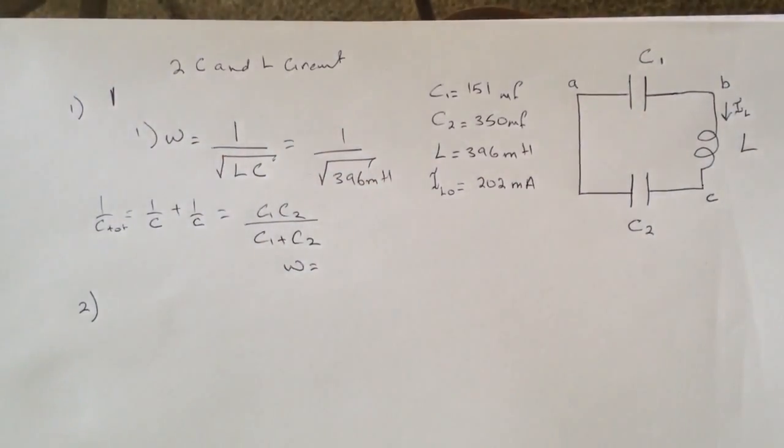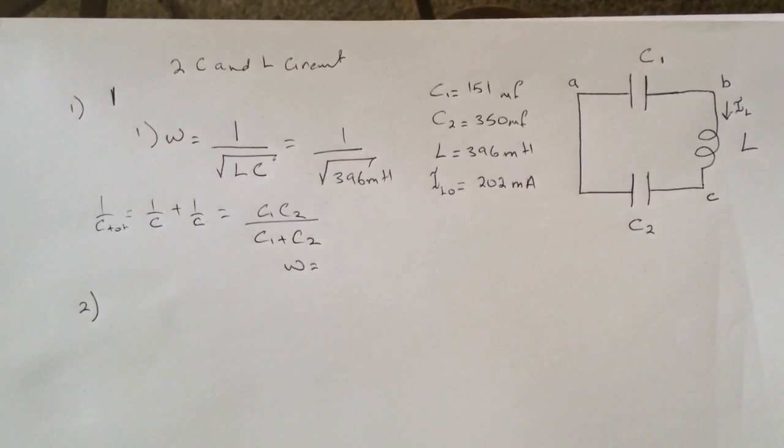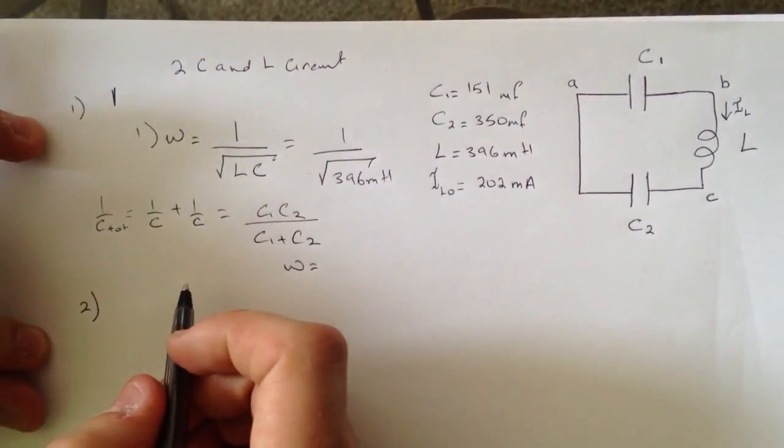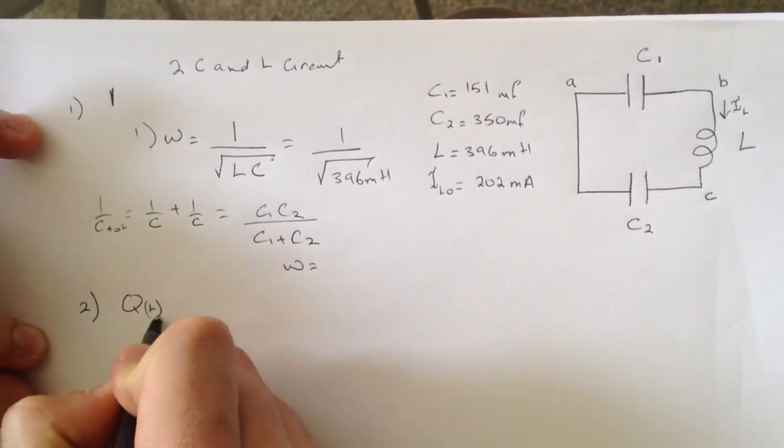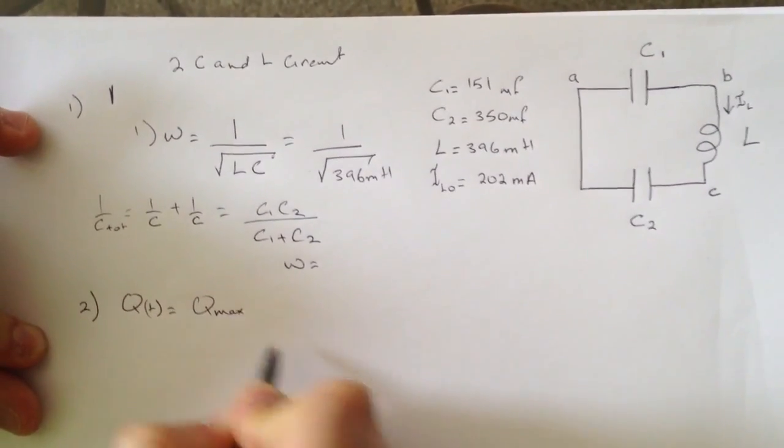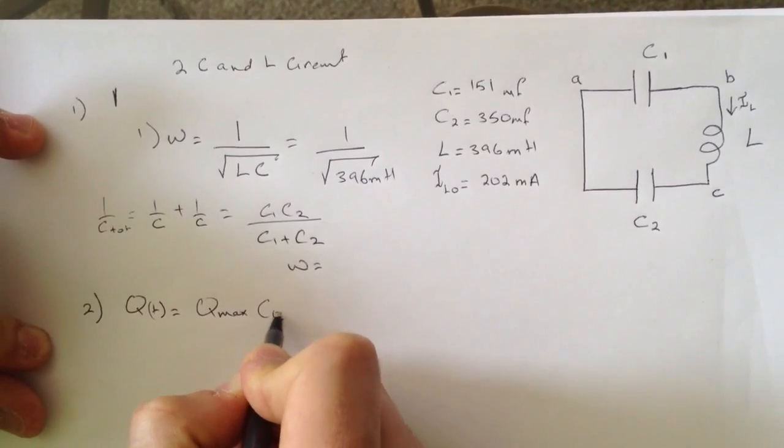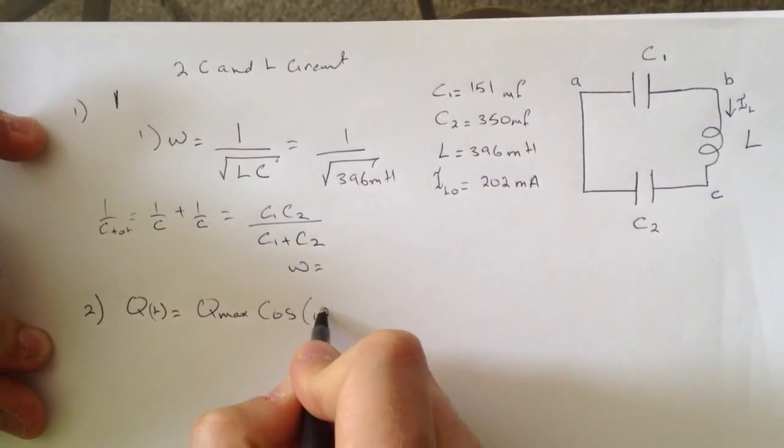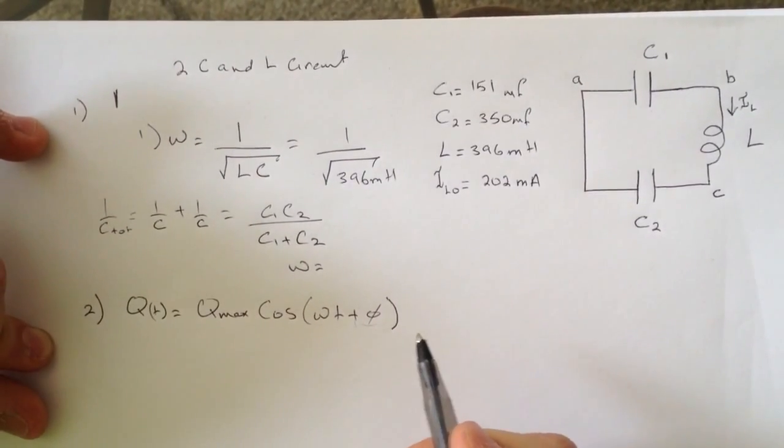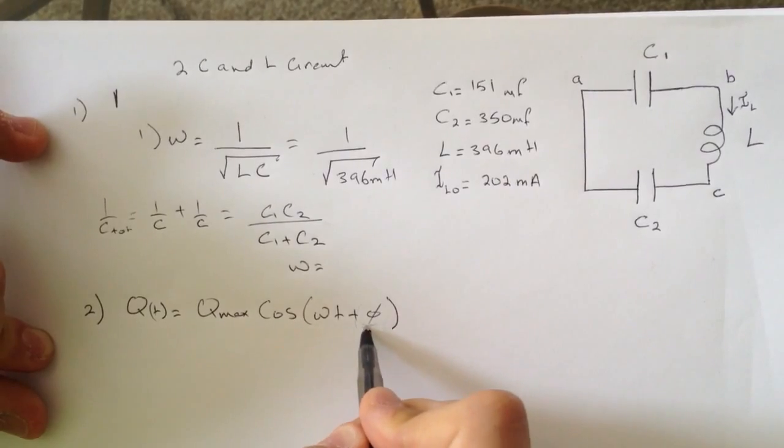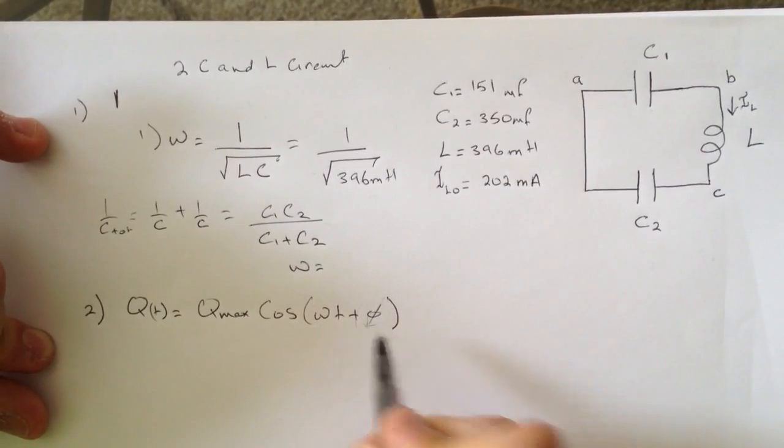Question number two: they're asking what is Q1 at time T1, the charge on capacitor C1 at time equal to T1, and T1 is 23.7 milliseconds. So what we're going to do is use this rule: Q(t) equals Q max cosine of omega t plus phi. This was kind of the problem with me here because I was solving it without paying attention to this thing.